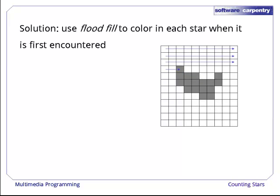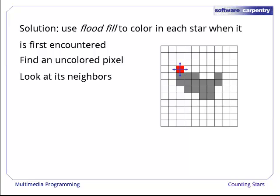Instead of trying to decide whether pixels are connected one by one, let's use flood fill to color in all the pixels in a star when it is first encountered. As before, we scan the image until we find a black pixel, then mark it red. Instead of continuing our scan right away, we look at the newly filled pixel's four neighbors.